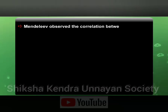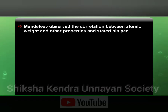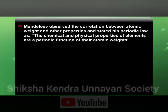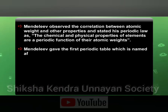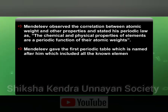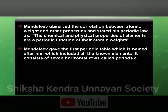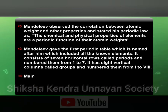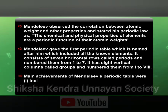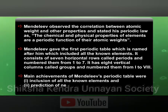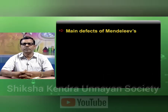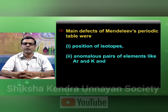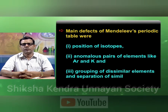Mendeleev observed the correlation between atomic weight and other properties and stated his periodic law: the chemical and physical properties of elements are a periodic function of their atomic weight. Mendeleev gave the first periodic table, named after him, which included all the known elements. It consists of seven horizontal rows called periods, numbered 1 to 7, and eight vertical columns called groups, numbered 1 to 8. The main defects of Mendeleev's periodic table were the position of isotopes, anomalous pairs of elements like argon and potassium, and grouping of dissimilar elements and separation of similar elements.